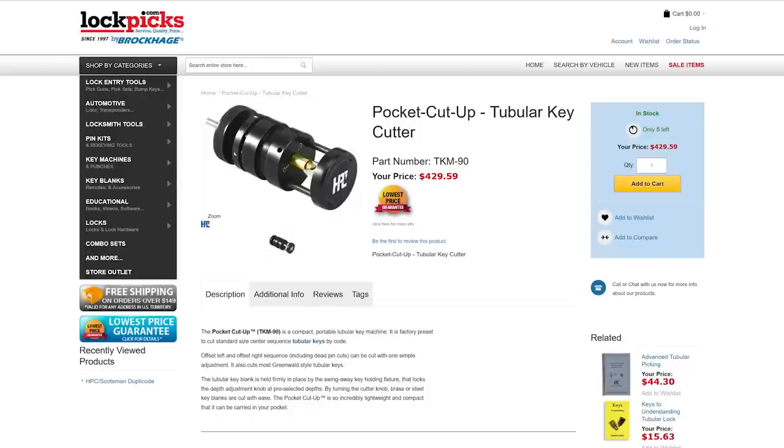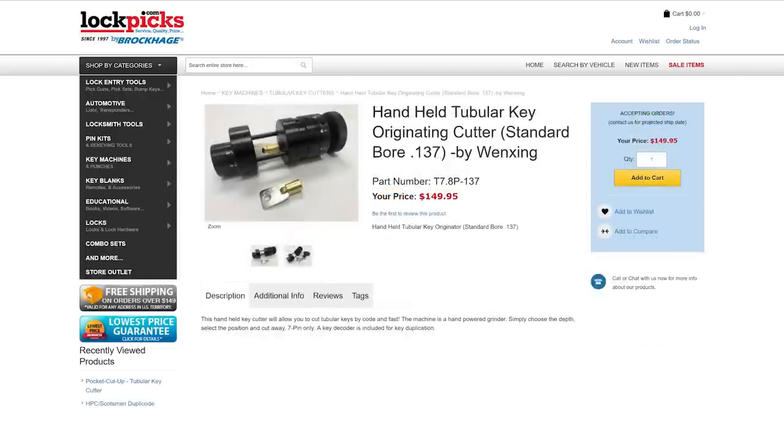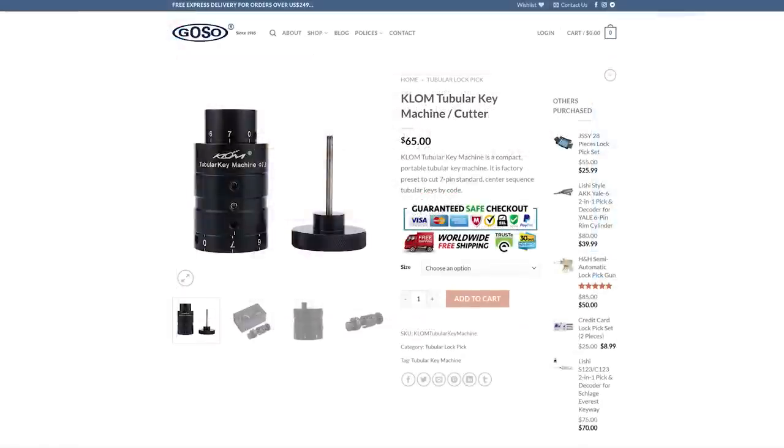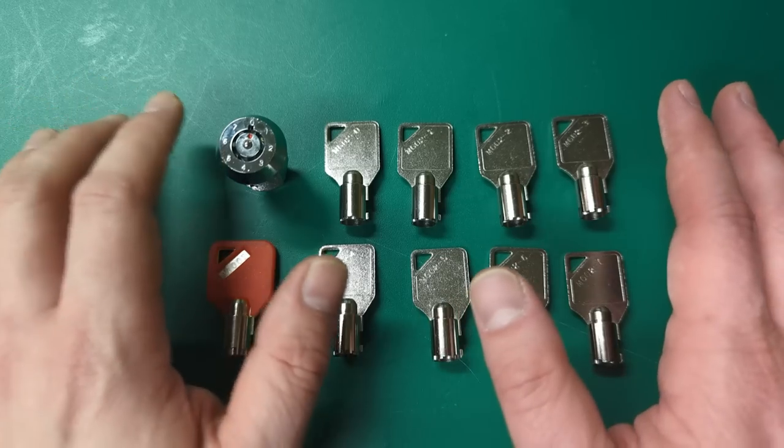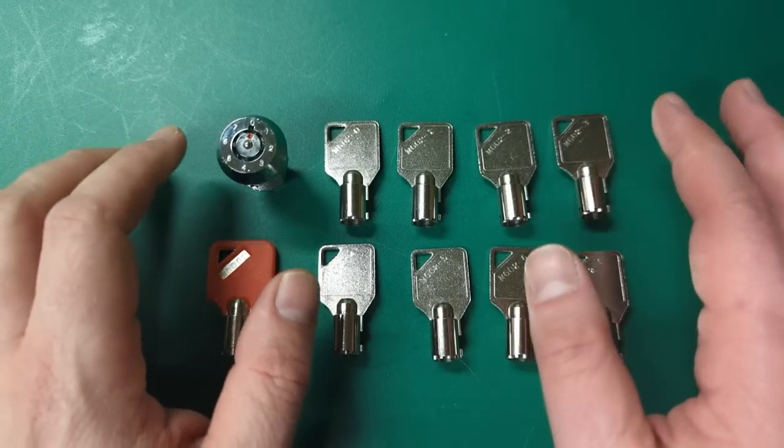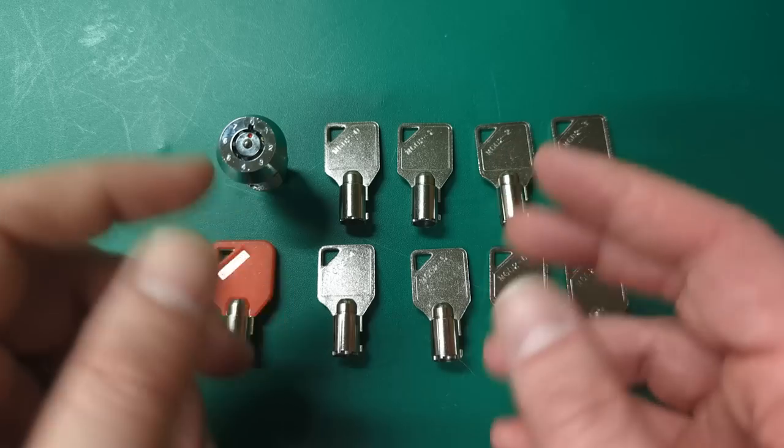It's actually a key cutter that I have been looking into for a while because Hudson Lock HPC used to make it and I think they still might produce it, but it's very expensive. And then Wing Xing makes a copy and Kalom or Klom makes a version. I think they're all almost the exact same tool.